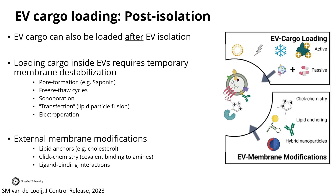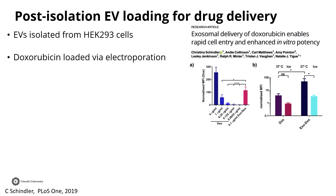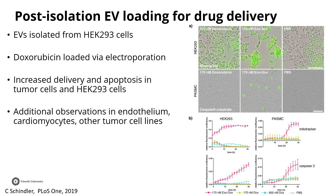As an example, doxorubicin — an anti-cancer small molecule drug — can be loaded into EVs by electroporation. Conveniently, doxorubicin also has fluorescent properties, so you can easily track it. Adding similar levels of doxorubicin incorporated into EVs versus giving it separately to cells strongly increases not only delivery, but as shown in the bottom graphs, the same dose delivered through EVs — the purple lines — strongly increases the efficacy of this drug, while also providing a completely different biodistribution profile.